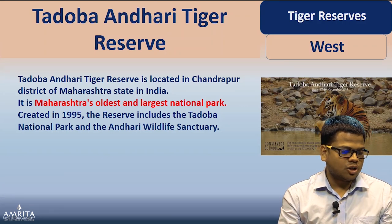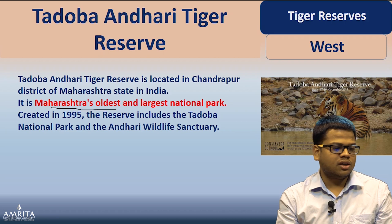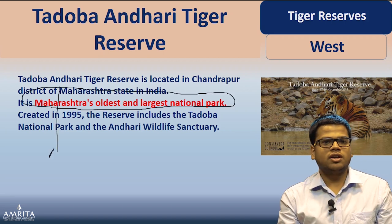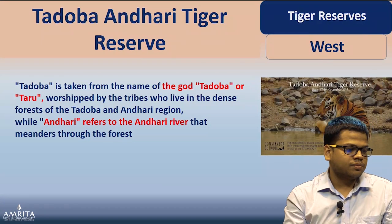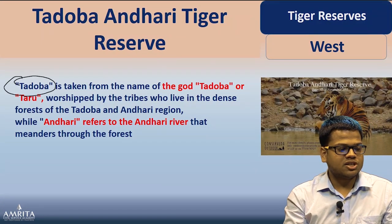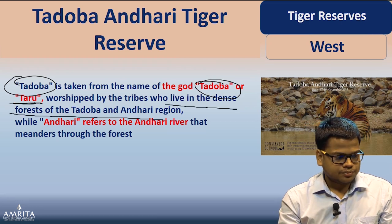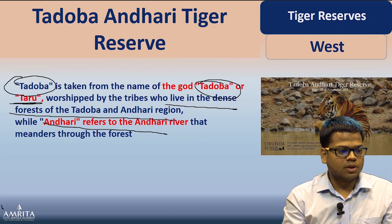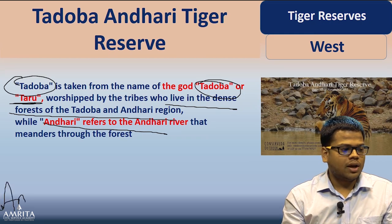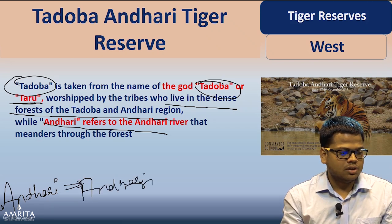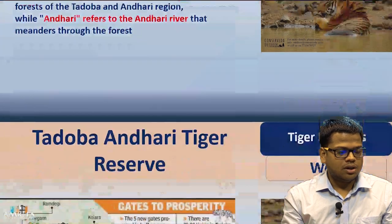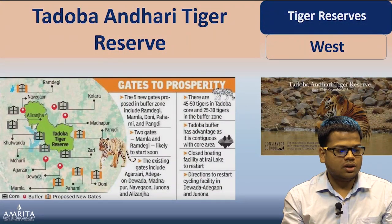Tadoba-Andhari Tiger Reserve is Maharashtra's oldest and largest tiger reserve. The name 'Tadoba' comes from 'Taru,' a local god worshipped by the tribes living in the dense forests of this area, while 'Andhari' refers to the Andhari River that flows through the reserve. This is a useful mnemonic — Tadoba from the tribal god, Andhari from the river.